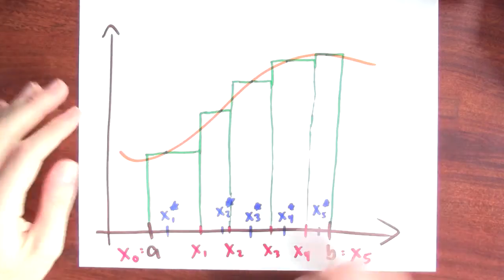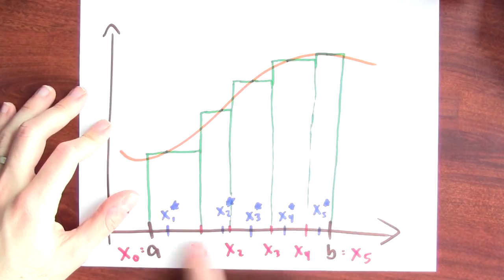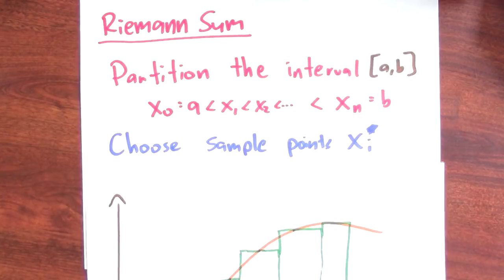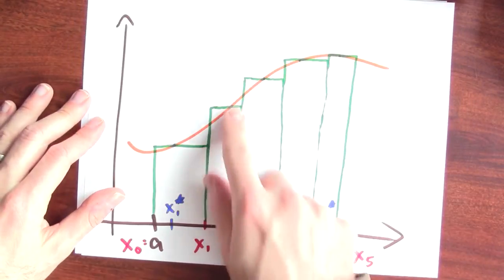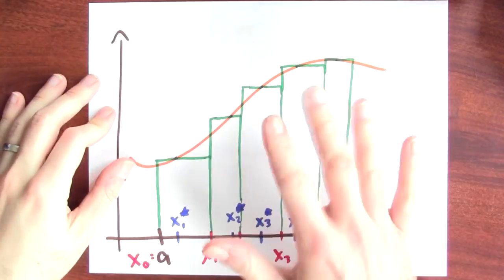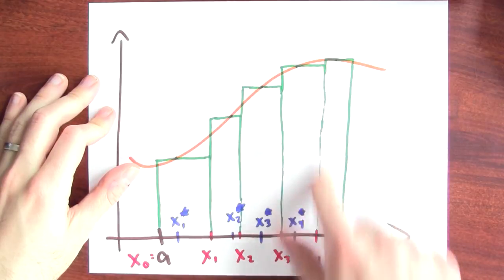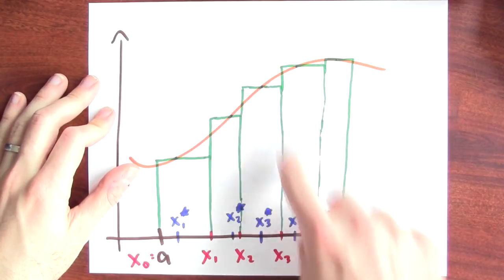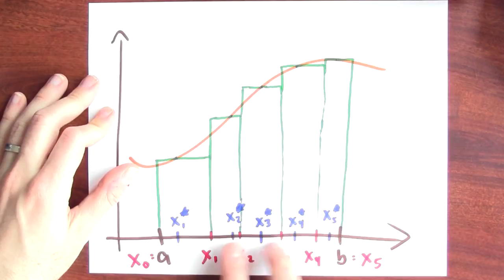The next step is to choose your sample points inside each of those subintervals. After I've decided where to cut up my interval A to B — chosen the x_i's — I need to choose the blue sample points, the x_i stars. So the next step is to choose sample points x_i star. Those sample points will be used to determine the heights of the rectangles by evaluating the function at those sample points.